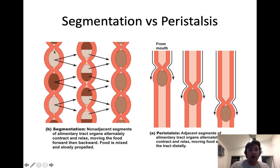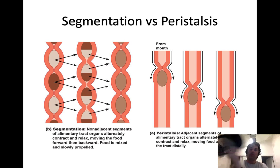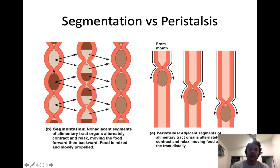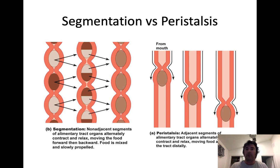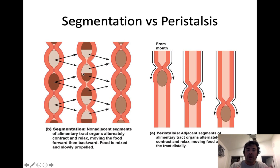Segmentation, on the other hand, is when non-adjacent layers of smooth muscle are contracting. When non-adjacent layers contract, you move material back and forth — essentially mixing it. Imagine shaking a Gatorade mix back and forth to mix it up. When non-adjacent segments of smooth muscle along the GI tract contract to mix material, that is a form of mechanical digestion called segmentation. An organ where segmentation is the most prominent contractile pattern would be the small intestines.